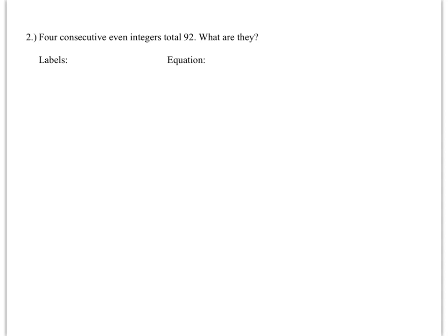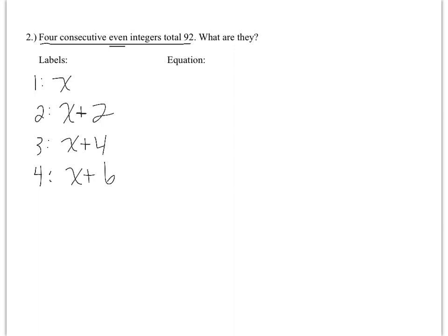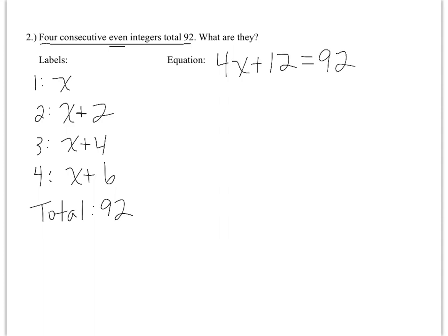Problem 2: Four consecutive even integers total 92. What are they? For even integers, the labels are x, x plus 2, x plus 4, and x plus 6. The total is 92. Combining like terms: 4x plus 12 equals 92. This problem only asks for labels and the equation, so we stop there and don't solve.